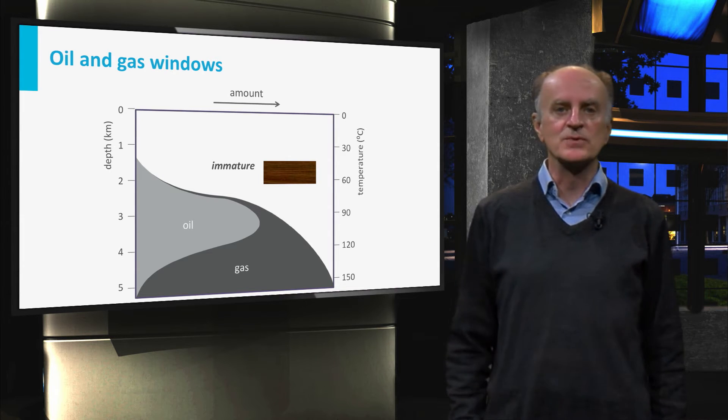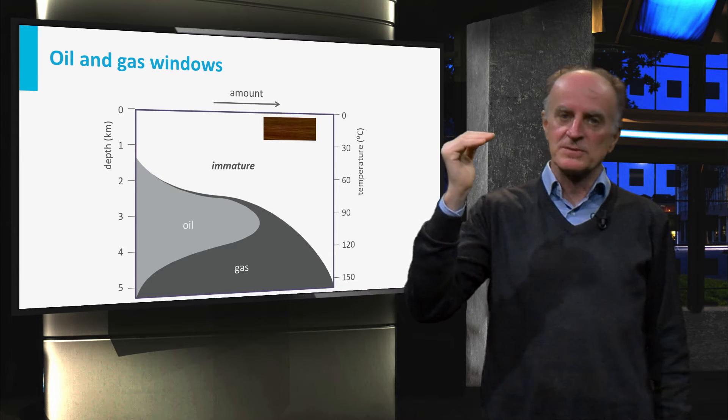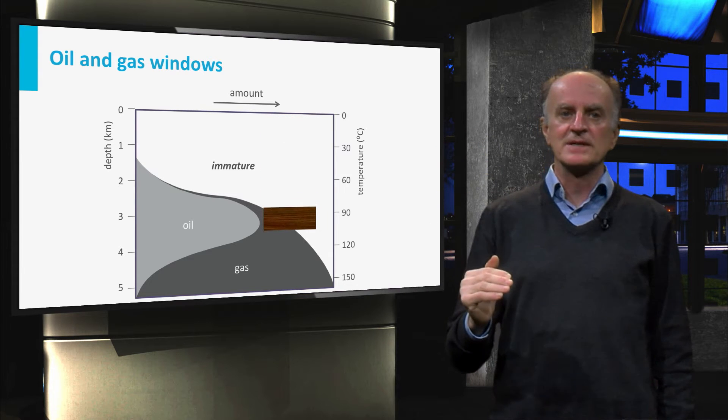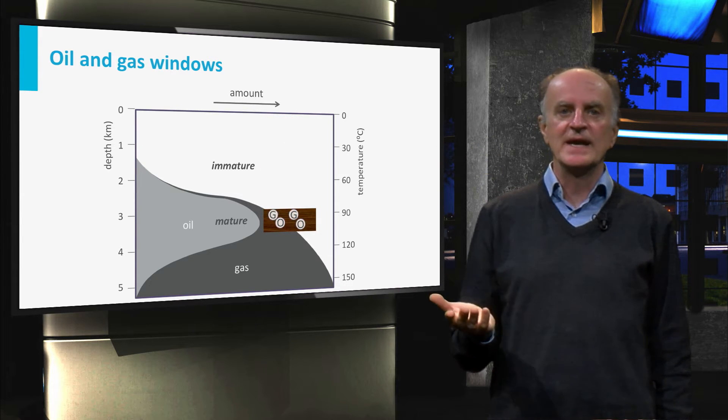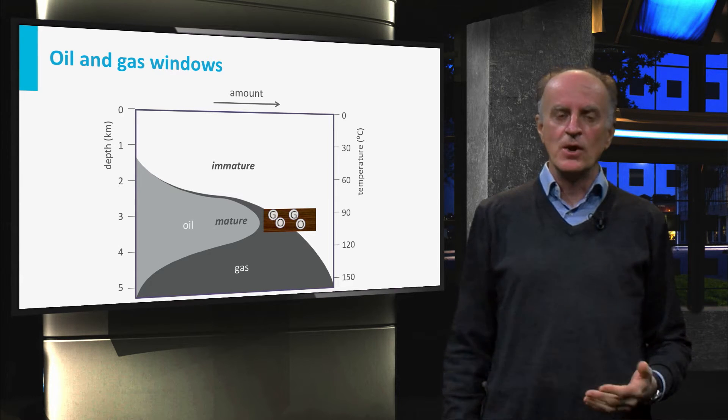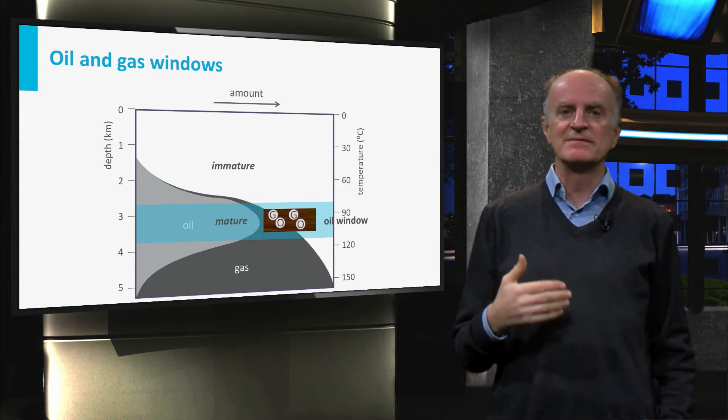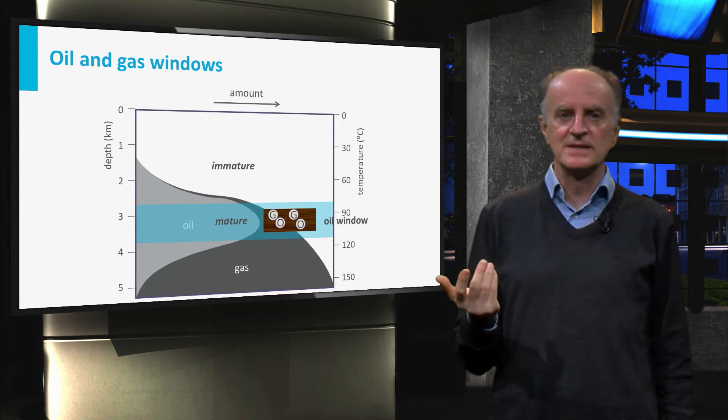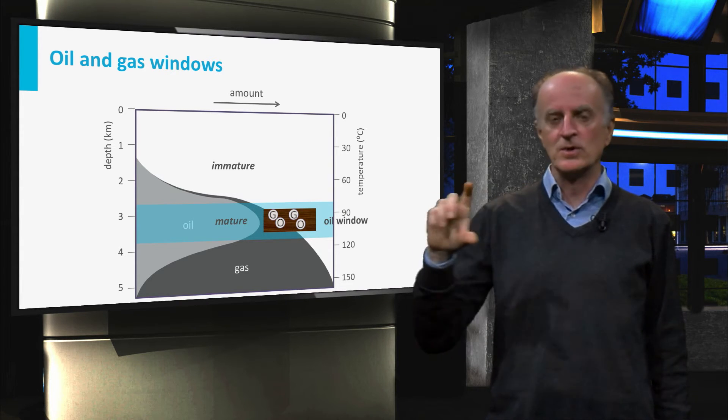If the rock subsides at deeper levels, kerogen cracking will occur and hydrocarbons are produced. The rock is called mature. Oil generation reaches a maximum between 70 degrees and 100 degrees. This interval is called the oil window.